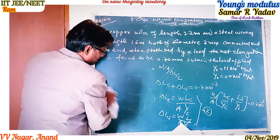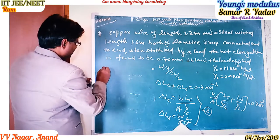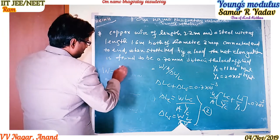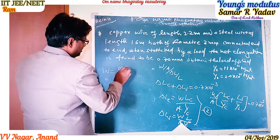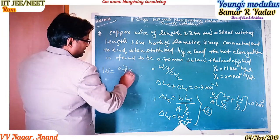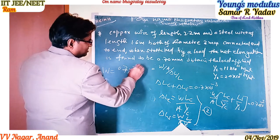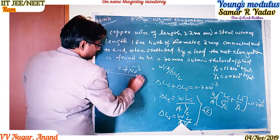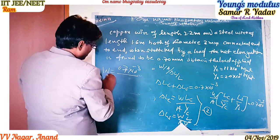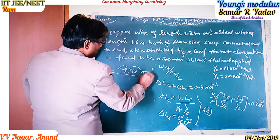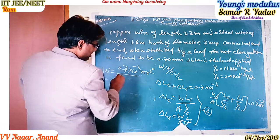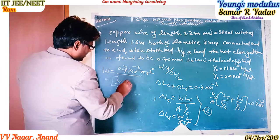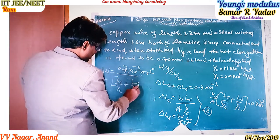We rearrange to make W the subject: W equals 0.7 into 10^(-3) multiplied by A, where A equals pi into R squared, divided by (L_c upon Y_c plus L_s upon Y_s).